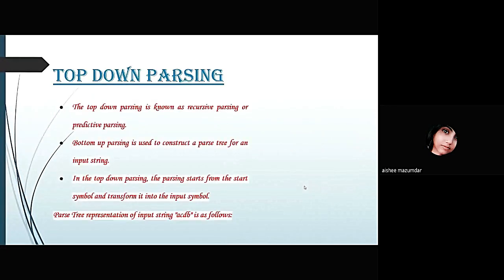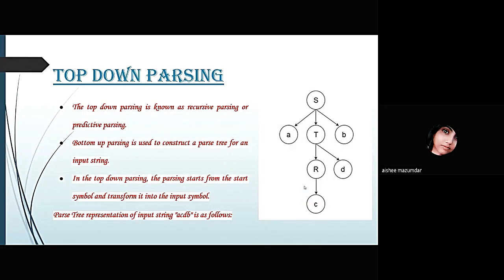Top-down Parsing is also known as Recursive Parsing or Predictive Parsing. The process of constructing the Parse tree which starts from the root and goes down to the leaf is top-down Parsing. Top-down Parsers construct from Grammar which is free from ambiguity and left recursion. It uses leftmost derivation to construct a Parse tree and allows a Grammar which is free from left factoring. The Parsing starts from the start symbol and transforms into the input symbol. In the adjoining figure, you can see the Parse tree representation of an input string ACDB, where the root node extends A, T and B nodes, and the R and D nodes are extended by root node T, with the last node C extended by node R.